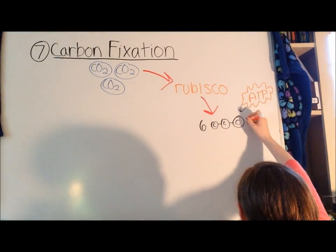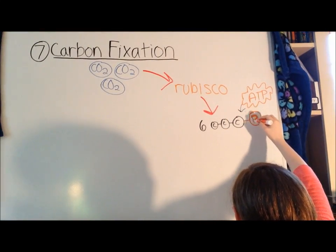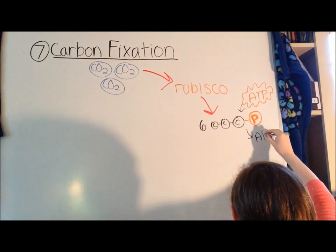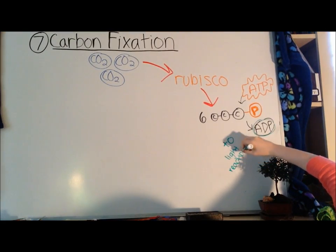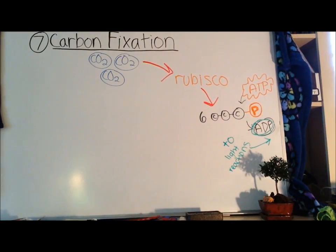These phosphates come from six molecules of ATP, donating one of their three phosphates, leaving them as ADP. The ATP came from the light reactions. The ADP left and goes back to the light reactions to become ATP again.